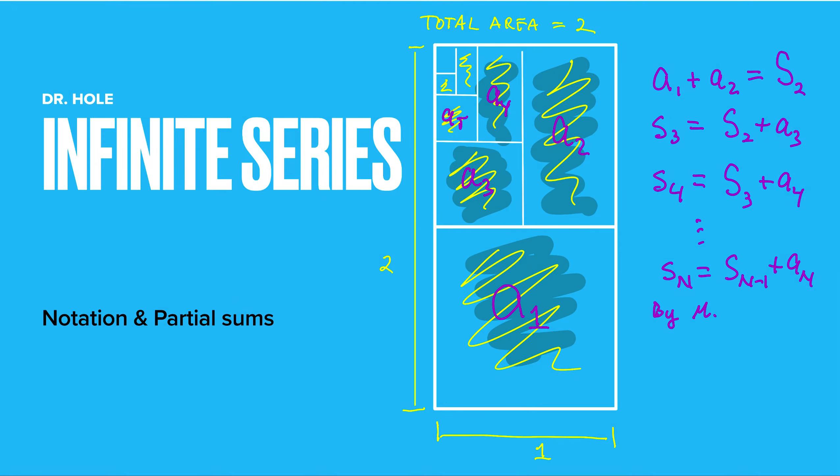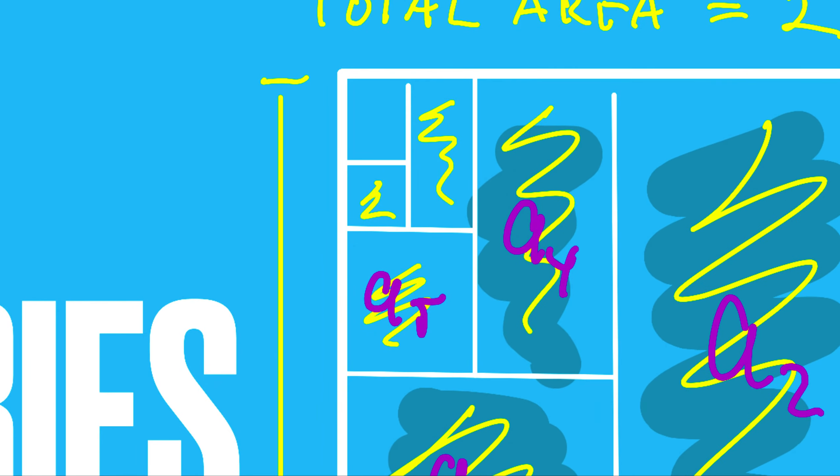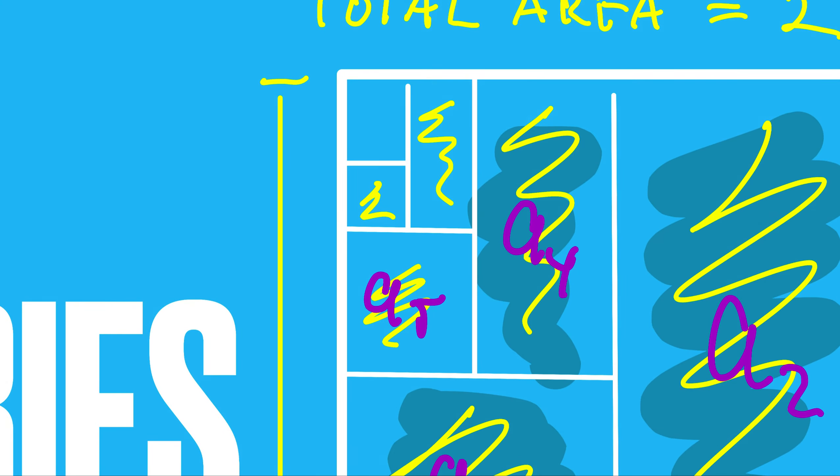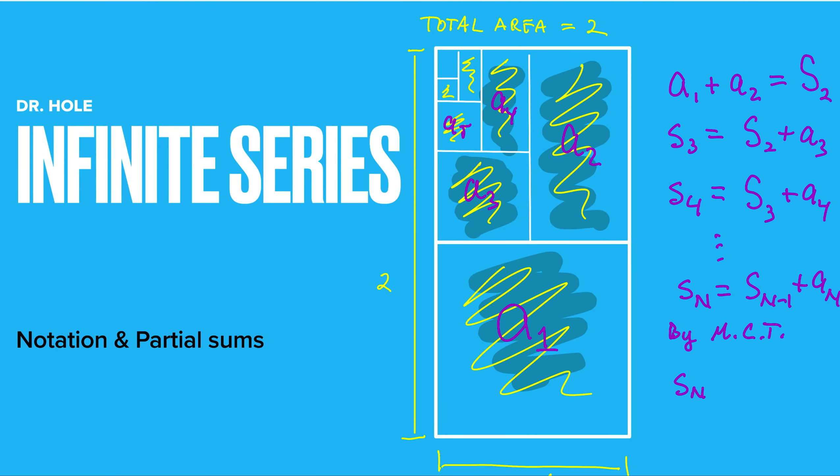So we can apply the monotone convergence theorem to the sequence of s n's, and conclude by looking at this picture, that when we end up shading all this area, which physically would happen rather quickly, but mathematically will never happen, there will always be a little bit left over, unshaded, is going to converge to the value 2, as n goes out to infinity.